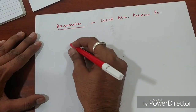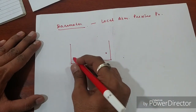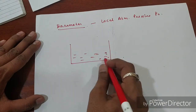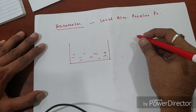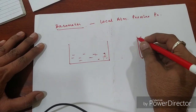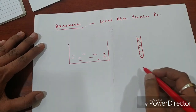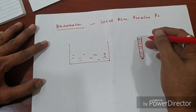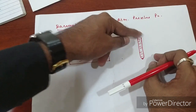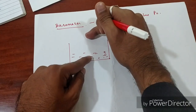So what is a barometer? We will take a container and pour mercury into it. Simultaneously, we will take a tube and pour the same liquid mercury into it to a certain level. After pouring the mercury to this level, you will close this opening with the help of a finger.